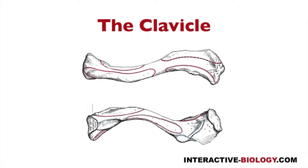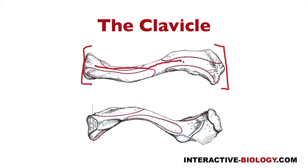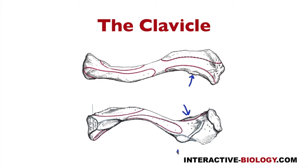Now let's talk about the clavicle. With the clavicle we have the acromial end, the sternal end, and the shaft of the clavicle. Then we have the deltoid tubercle — you can also see the deltoid tubercle over here. Then we have the coracoid tubercle, the trapezoid line, the subclavian groove, and the costal tuberosity.